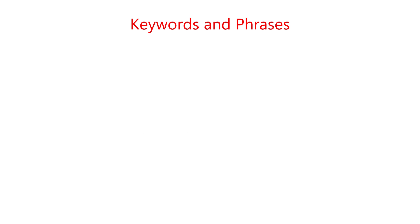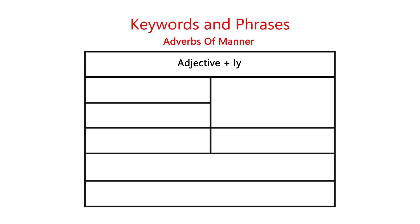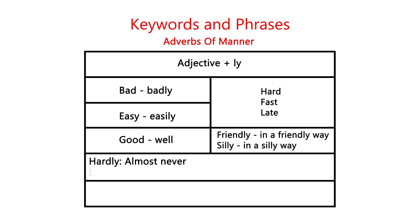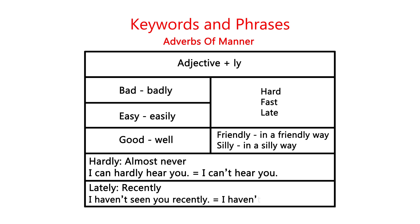Let's review today's keywords and phrases. We learned how to form and use adverbs of manner: add -ly to the end of an adjective to describe how we do an action. Rules: bad→badly, easy→easily, good→well, hard/fast/late stay the same, friendly→'in a friendly way,' silly→'in a silly way.' And remember: 'hardly' means 'almost never' — 'I can hardly hear you' means I can't hear you. 'Lately' means recently — 'I haven't seen you lately.'